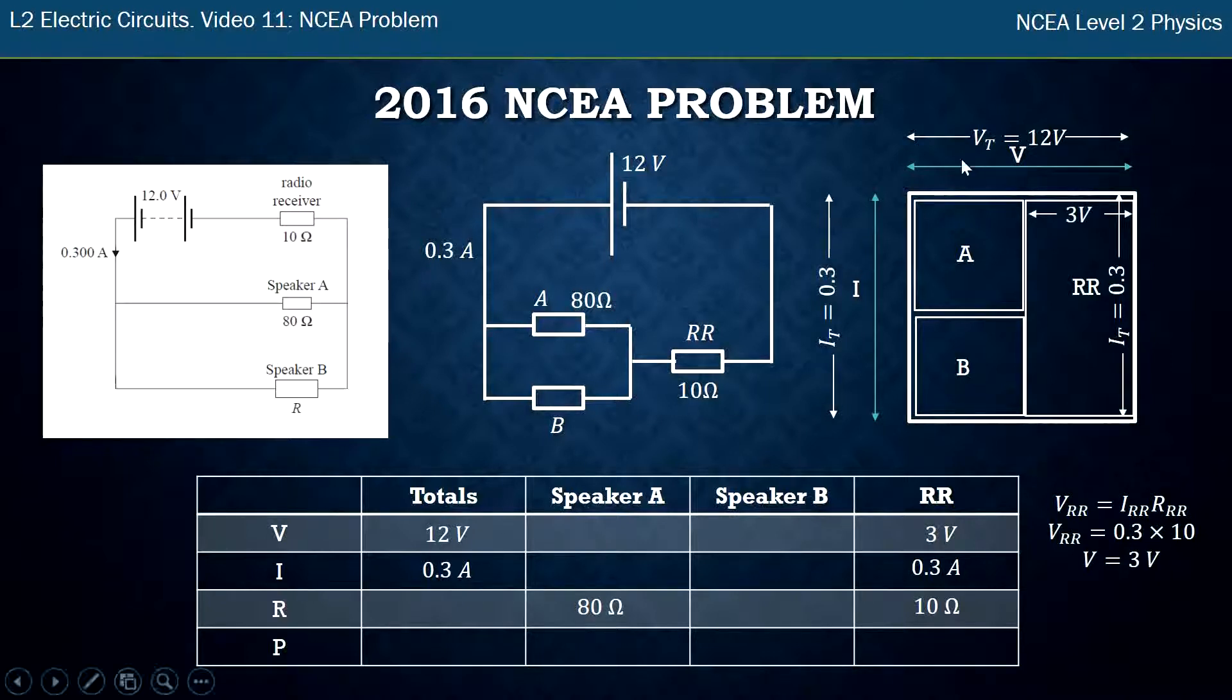Now I know the total width across here is 12 but this is 3 so then A must be 9. So now I've got the value for A and actually B is the same width as well. So I've got 9 volts there as well.